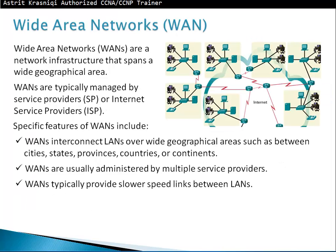Wide Area Network (WAN) features: a WAN spans a wide geographical area and is typically managed by service providers or internet service providers. WANs interconnect LANs across cities, states, provinces, countries, or continents. Multiple LANs are connected across a wide area. WANs are usually administered by multiple service providers and typically provide slower speed links between local area networks.